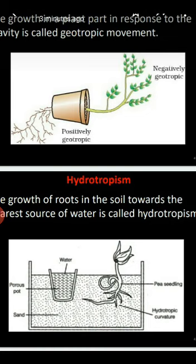The movement of roots shows positive geotropism, while the movement of shoots shows negative geotropism. Next is hydrotropism. 'Hydro' means water, 'tropism' means development or movement. Here the growth or movement of plants is towards or away from water. Hydrotropic movements are generally recognized in aquatic plants.